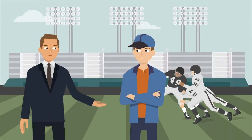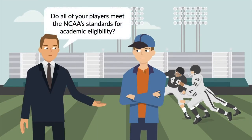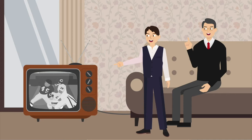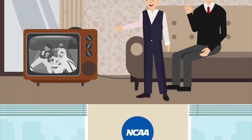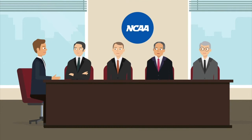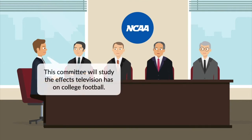Since its inception in 1905, the NCAA has played an important part in regulating college sports. In 1938, the University of Pennsylvania began televising home college football games. That decision, however, was met with some resistance by the NCAA, and in 1950, the NCAA appointed a committee to study the effects that television had on college football.